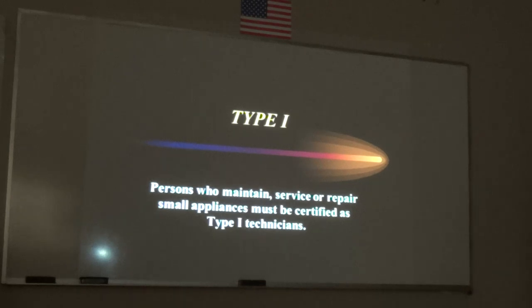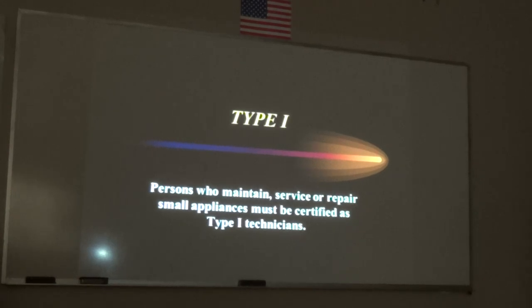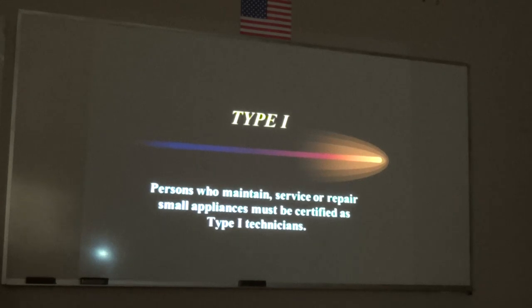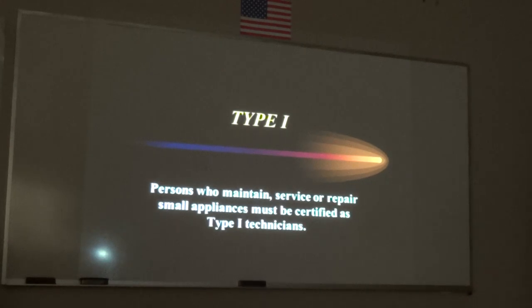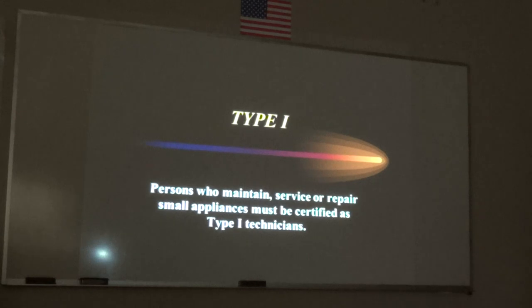You must pass the core for certification. If you pass core and only pass type one, then when you hit the enter button, the computer will print out a type one certified refrigerant handling certificate. You can come back and retake just the part you didn't pass. If you didn't pass type two or three, you don't have to retake core — just take type two and three. With a little effort this week, take the exam on Saturday and get your universal certification.